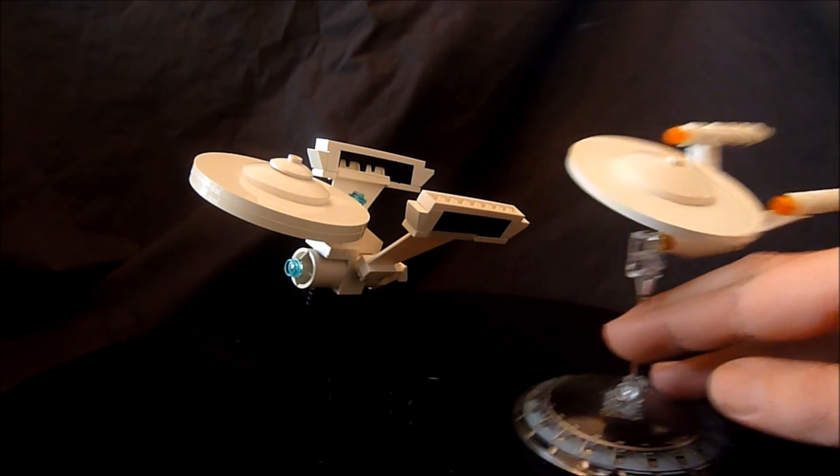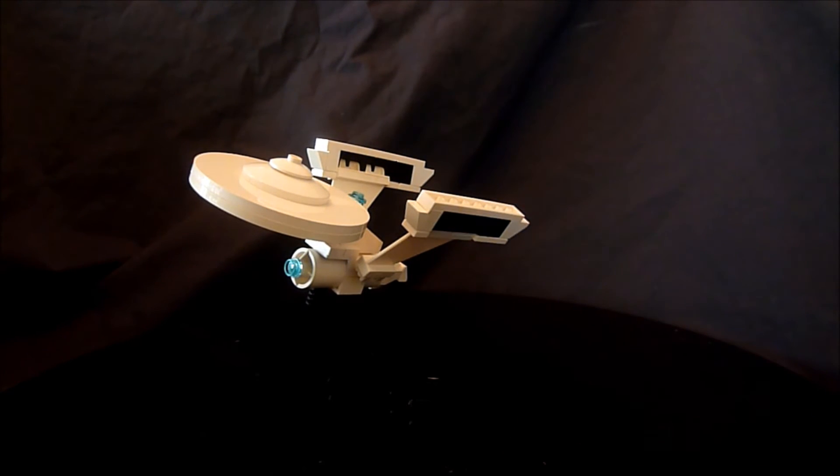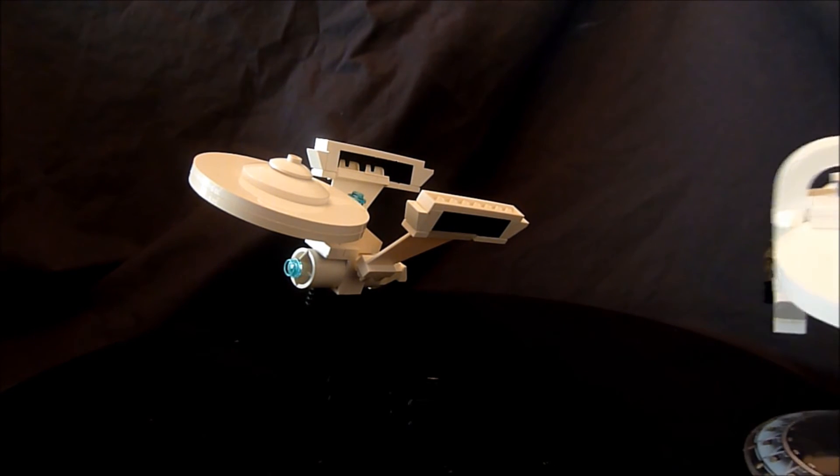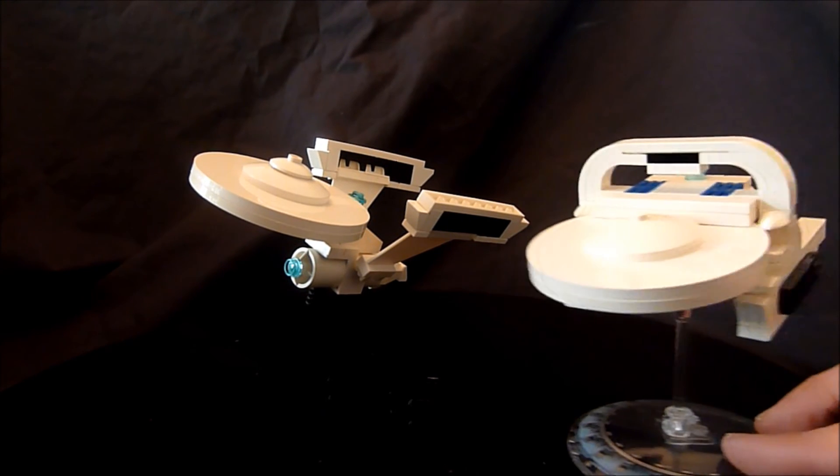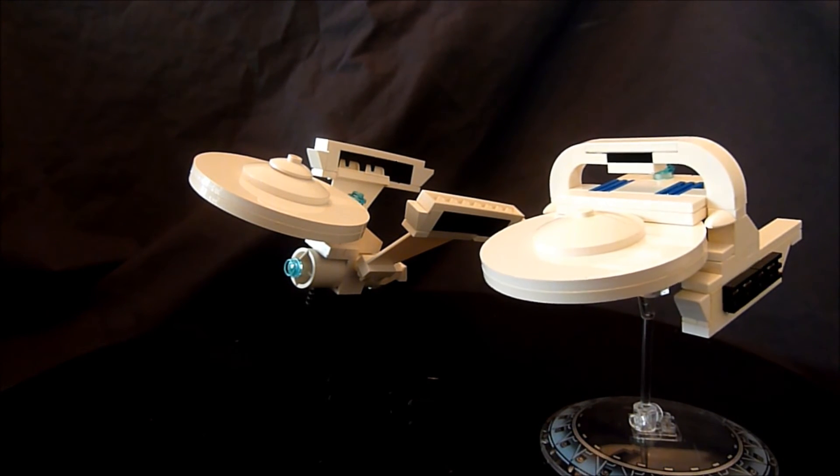Also, let me bring in the Reliant, which is from the original Wrath of Khan, and you can see the size comparison here. I can now have a duke out. Now I just need a Mutara Nebula.